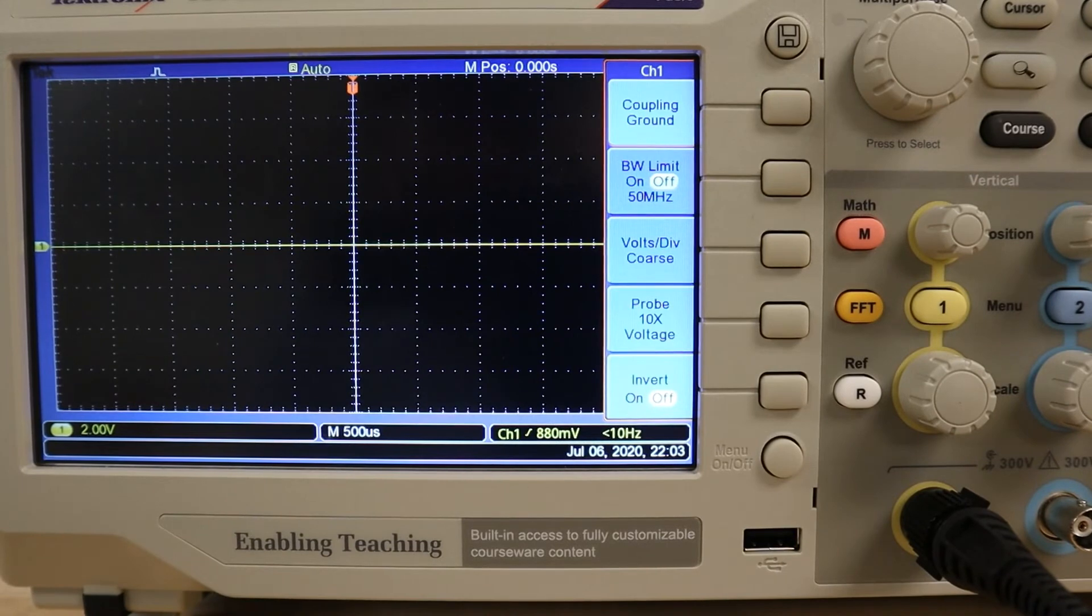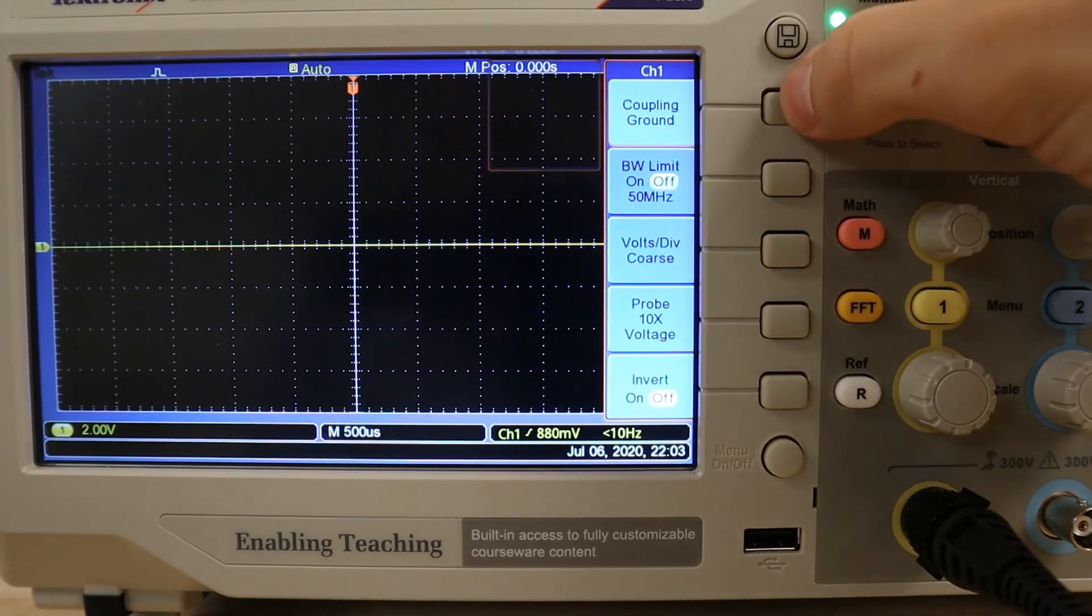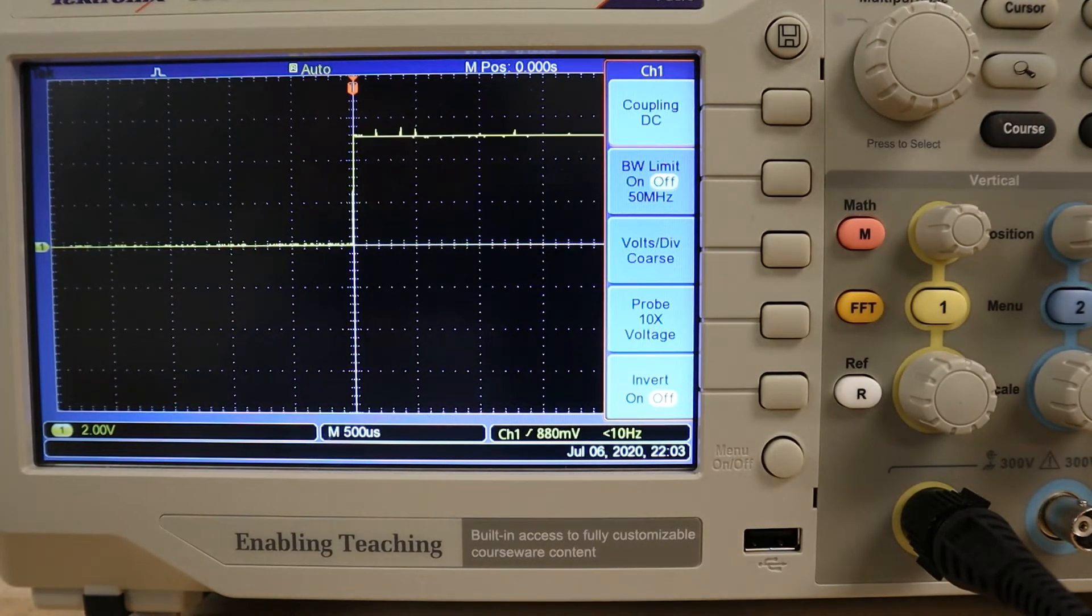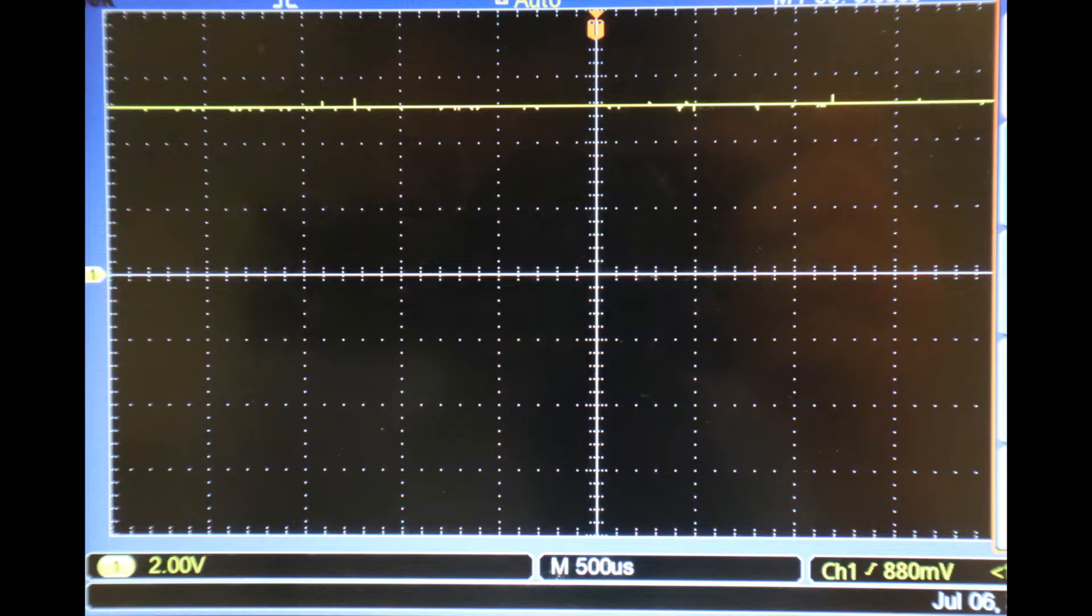So now, if we change our coupling back to DC, and attach the hook tip of the scope probe to the positive binding post, and connect the grounding clip of the probe to the grounded binding post, we will see what we expect. The flat line on the oscilloscope screen moves from 0 to approximately 2 1⁄2 divisions, indicating a reading of approximately 5 volts.